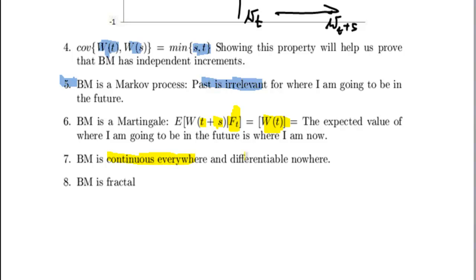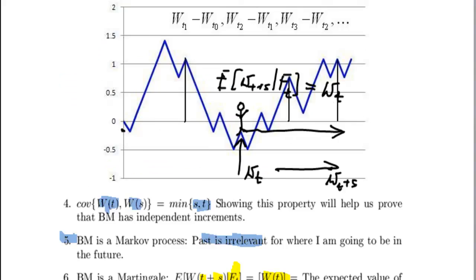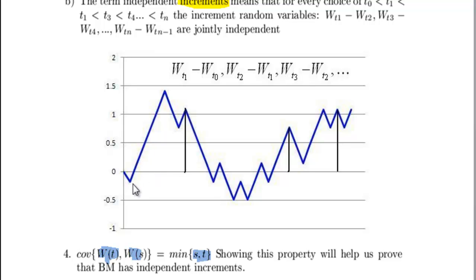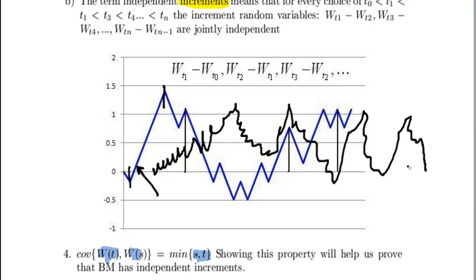Property number 7: Brownian motion is continuous everywhere and differentiable nowhere. You can probably see it here — it's continuous everywhere because there are no jumps or discontinuities in the Brownian motion path. However, you cannot differentiate it anywhere. You might ask: surely you can find the derivative of a smooth-looking portion. Well, my depiction of Brownian motion is a bit inaccurate here, because if you actually zoomed in, you would see that it goes up and down constantly. I can't really find the derivative at any point simply because it's just too rough — it's got spikes everywhere. If you ask me to find the derivative at a specific point, it's just impossible.